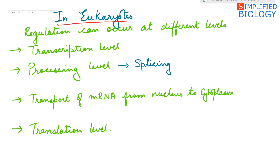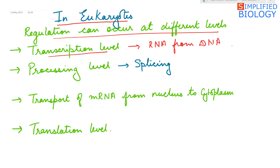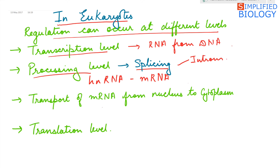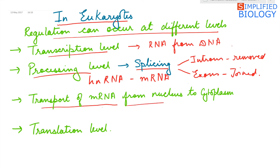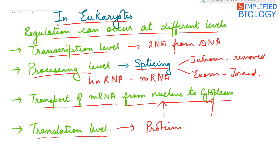In eukaryotes, genes can be regulated at different levels. First is the transcription level — during the formation of RNA from DNA. Second is the processing level, when the heterogeneous nuclear RNA is converted into messenger RNA; during this stage, splicing occurs where the introns are removed and the exons are joined to form the messenger RNA. Third, during the transport of messenger RNA from nucleus to cytoplasm, as transcription occurs in the nucleus and translation in the cytoplasm. Fourth, at the translation level — during the synthesis of proteins in the cytoplasm.